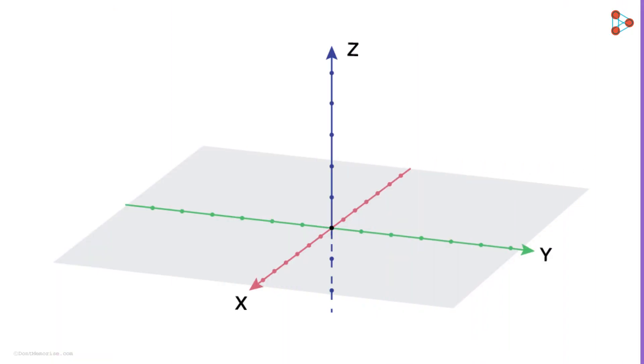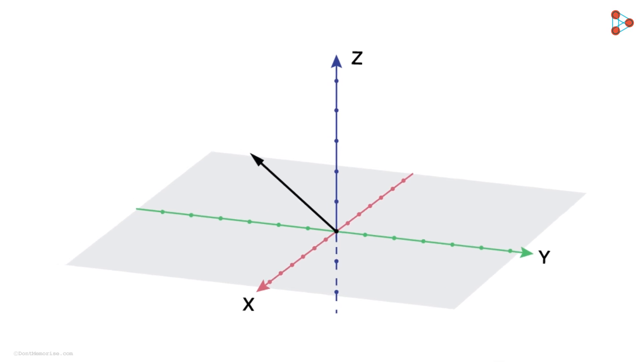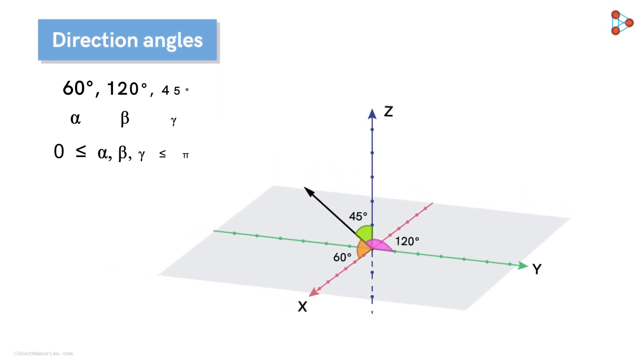Now, let's go back to the earlier example of the vector passing through the origin. It has the following direction angles. Now, consider a line in three dimensions coinciding with this vector.